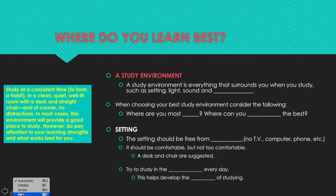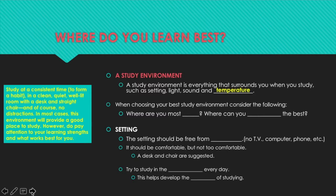Finally, let's look quickly at our study environment. A study environment is everything that surrounds you when you study: your lighting, sight, smells, where you're sitting. And one we forget about is temperature. If it's too hot, you're going to fall asleep. And if it's too cold, you're going to be chattering and not able to write. A kind of cool climate is usually best.